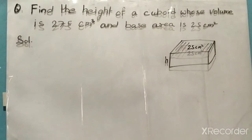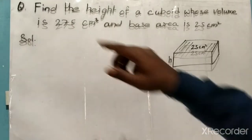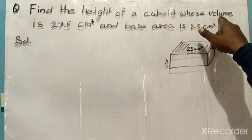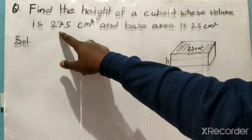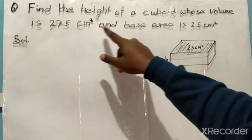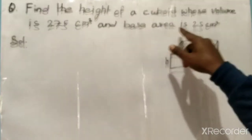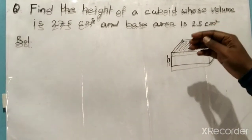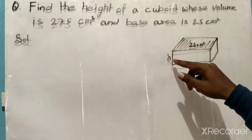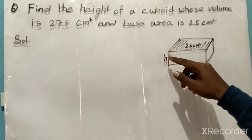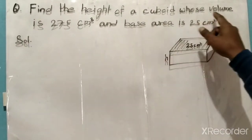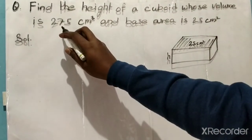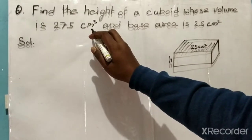Today's question is: find the height of a cuboid whose volume is 275 centimeter cube and base area is 25 centimeter square. We have to find the height of the cuboid. Here the height is not known, but the volume is known — the volume is 275 centimeter cube — and the area of the base is 25 centimeter square.